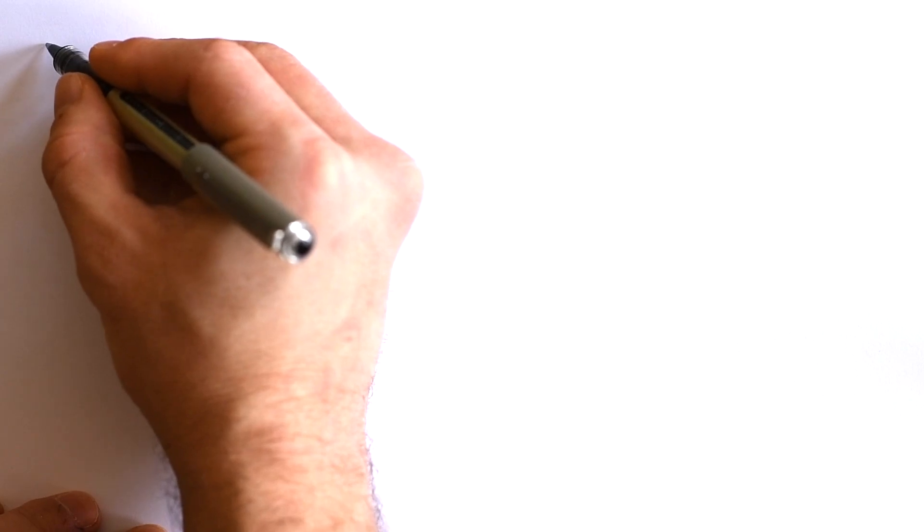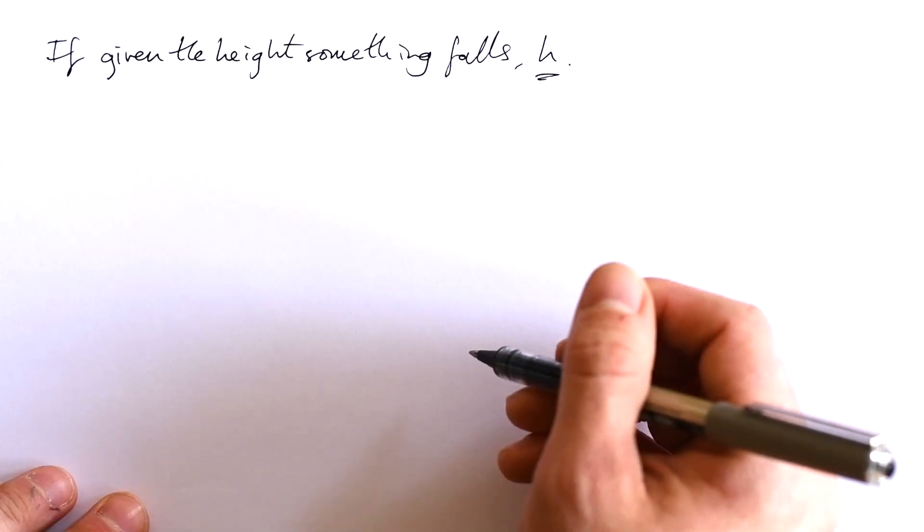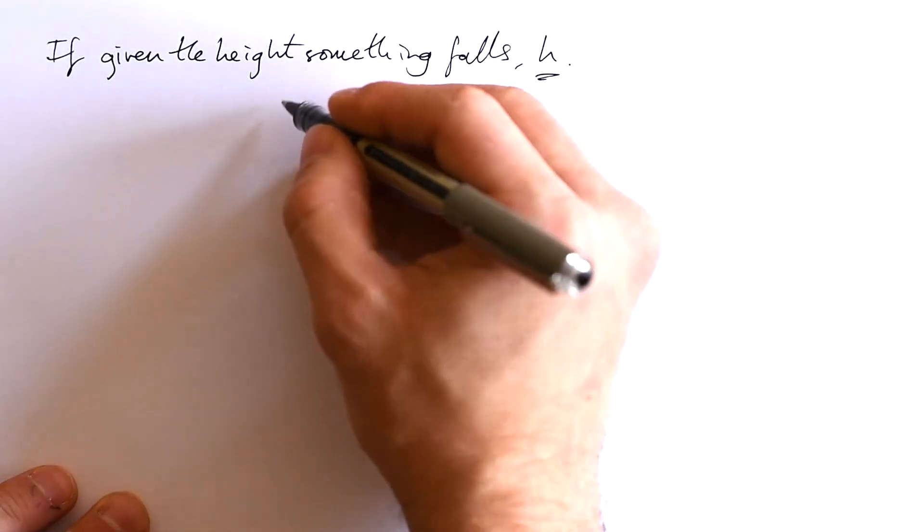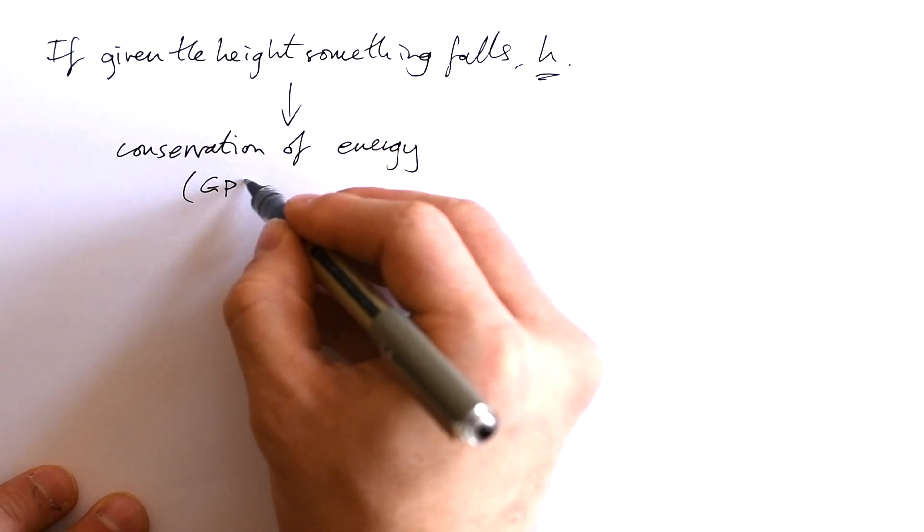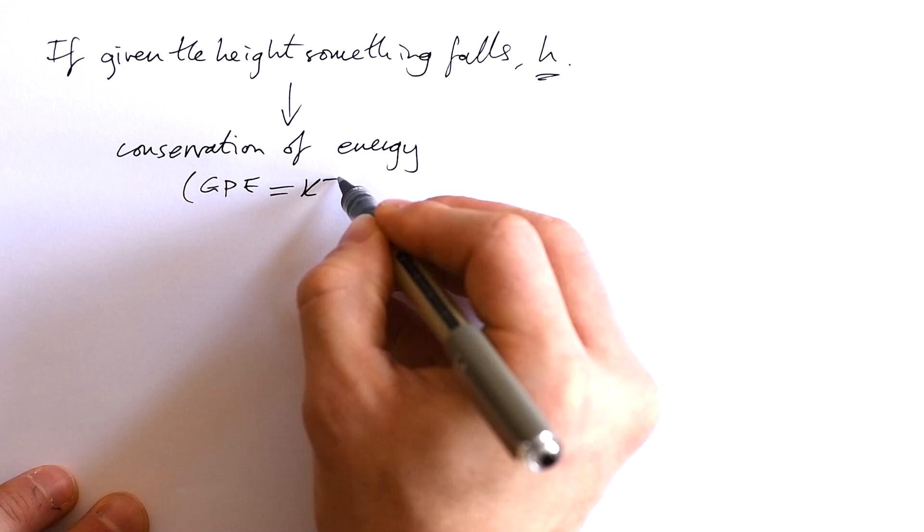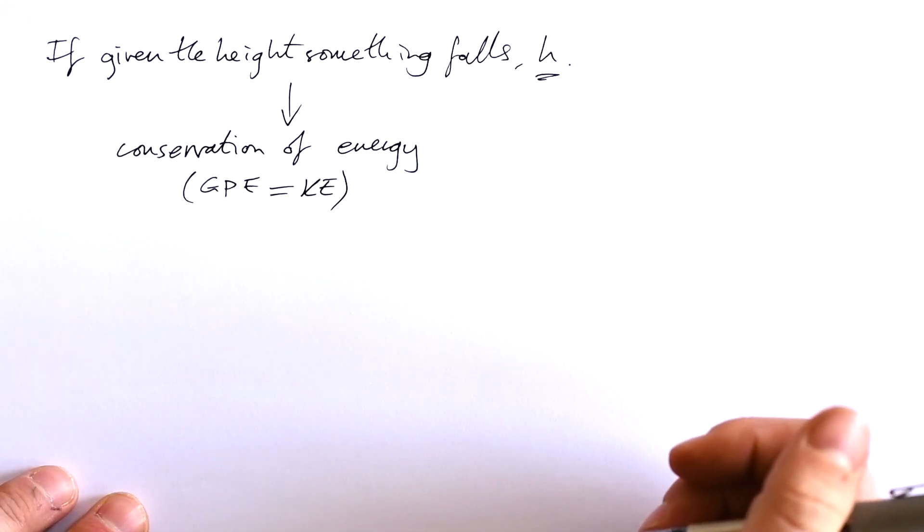Okay, here's a little trick for you when it comes to your exams. You might see a question where you're given the height that something falls. You can bet your bottom dollar that you're going to have to use conservation of energy. In other words, the amount of GPE that it has is going to be equal to the amount of KE that it has when it hits the floor.